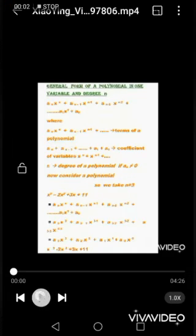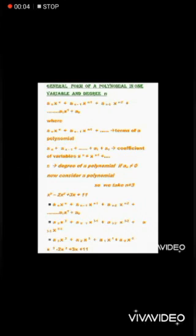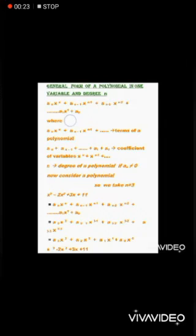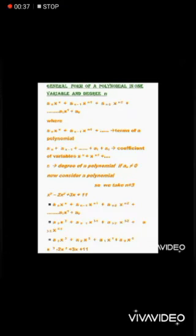You have seen polynomials of degree 1, 2, 3, 4, 5 and so on. A polynomial in one variable x of degree n is an expression of the form: aₙxⁿ + aₙ₋₁xⁿ⁻¹ + aₙ₋₂xⁿ⁻² + … + a₁x + a₀. This is called the general form of a polynomial in one variable of degree n, where n can be any whole number such as 0, 1, 2, 3, 4 and so on.